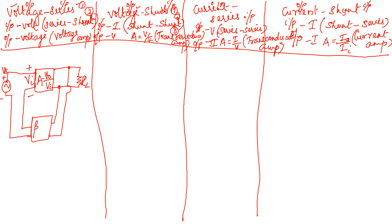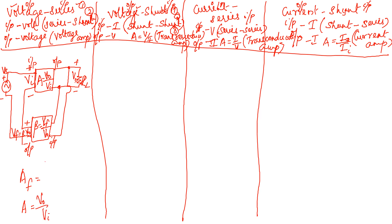The input to the amplifier is Vi. A portion of the output V0 is given as input to the feedback network. Since the feedback parameter is voltage, it is taken as Vf. So Vf equals beta times V0. The gain without feedback is V0/Vi, and the gain with feedback is the output V0 divided by the overall source input Vs.